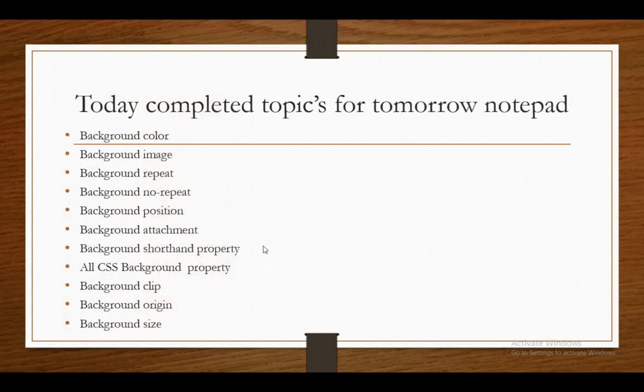So we have completed our topic. In tomorrow's notepad explanation I am going to tell every step by step — background color, background image, background repeat, background no-repeat, background position, background attachment, background shorthand property — and we have seen all the CSS background properties including background-clip, background-origin, and background-size. We are going to see all of these in tomorrow's notepad explanation.